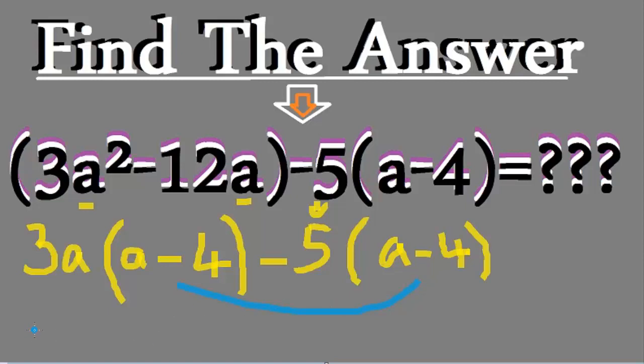Yes, you can see the bracket a minus 4, a minus 4, the same. When the same, we make it like this: a minus 4 close bracket. And what you can see, our bracket, there are 3a minus 5, we make in one bracket.